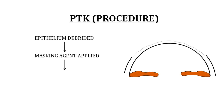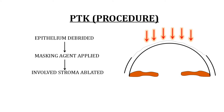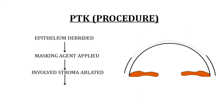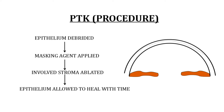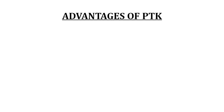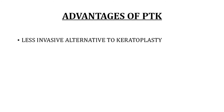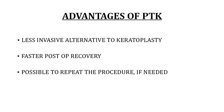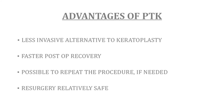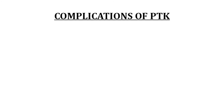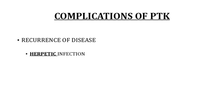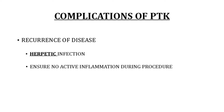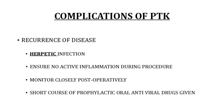In PTK, we first remove the epithelium, then apply a masking agent, and finally ablate the cornea. If the epithelium is smooth, transepithelial PTK is performed without removing the epithelium. After ablation, the epithelium heals on its own, usually in 3 to 7 days. Advantages include being a less invasive alternative to keratoplasty, faster post-op recovery, and the ability to safely repeat the procedure. An important complication is recurrence of disease, particularly recurrence of herpetic infection. Patients must have no active inflammation at the time of the procedure, must be monitored closely post-operatively, and a short course of prophylactic oral antiviral drugs is often given to prevent recurrence.